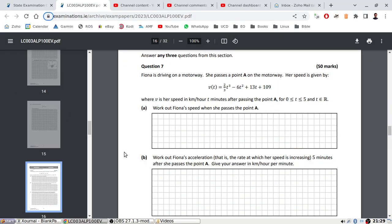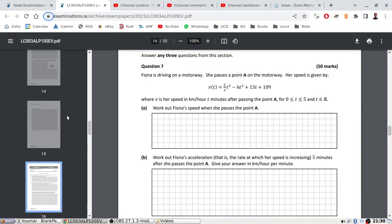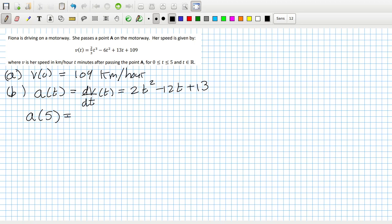Part B: Work out Fiona's acceleration, that is the rate at which her speed is increasing, 5 minutes after she passes point A. The acceleration function is just the derivative of the speed function. dV/dt = 2t² - 12t + 13. And we want the acceleration at the 5 minute mark. So I'll just sub in 5 now: 2 times 5 squared minus 12 times 5 plus 13. And that would be 3 kilometers per hour squared.